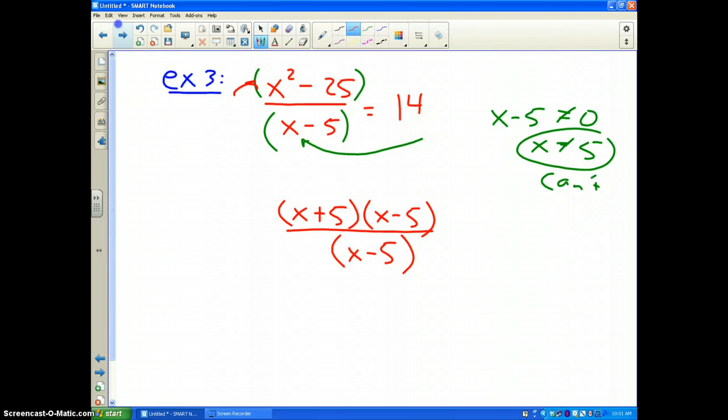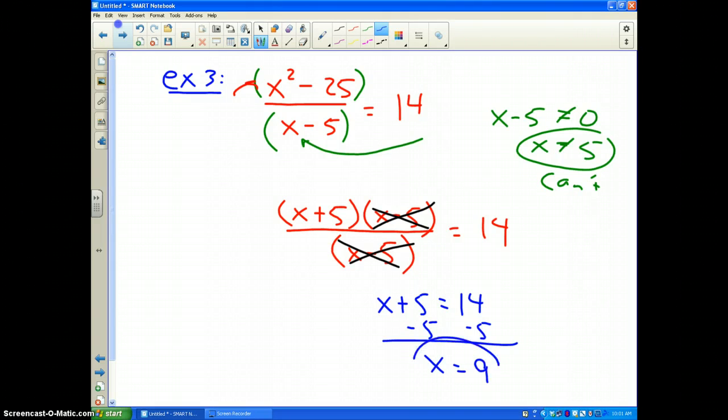All right, so let's go back down here and finish this. Equals 14. It looks like the x minus 5's cancel out. Which leaves me x plus 5 equals 14. And I minus 5 from both sides and I get x equals 9. And that is a valid number. It says it can't be 5. So, x equals 9 is our solution.